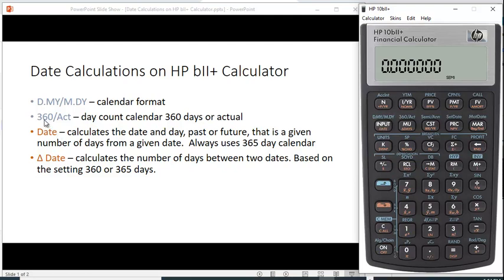You can also toggle back between a 360-day year or a 365-day year. That's what ACT stands for, actual. And again, you do the same thing to toggle. Right here, it's over the MU key. If it says 360, then you're using a 360-day year. If you don't see anything, it's the actual or the 365.